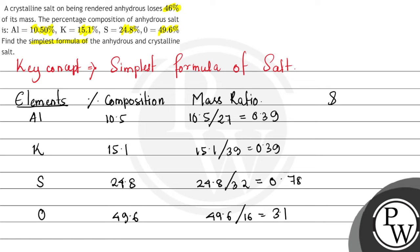Now we need to find out the simplest ratio by dividing all mass ratios by the least mass ratio, which is 0.39. So for aluminum we get 1, for potassium we get 1, for sulfur we get 2, and for oxygen we get 8.